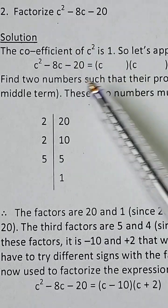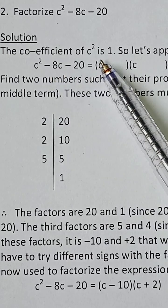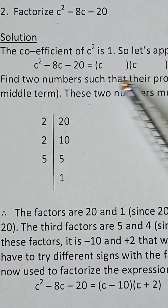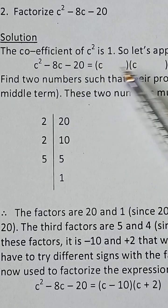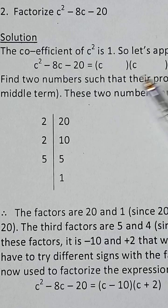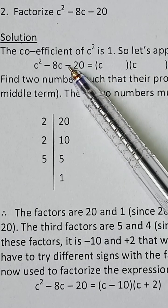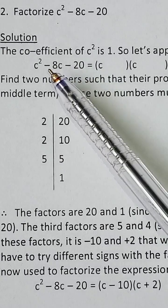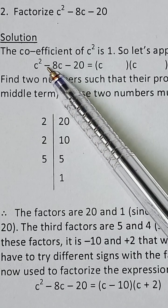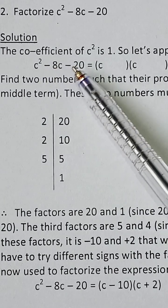A very simple way of factoring this is to open brackets and put c in the brackets. The next thing is to find two factors such that when you multiply them, you get -20, and when you add them, you get -8. That means two factors of 20.